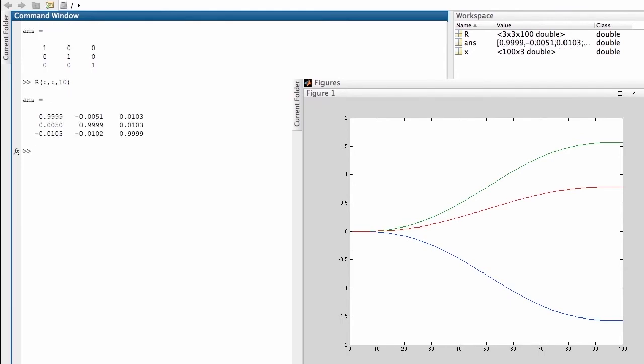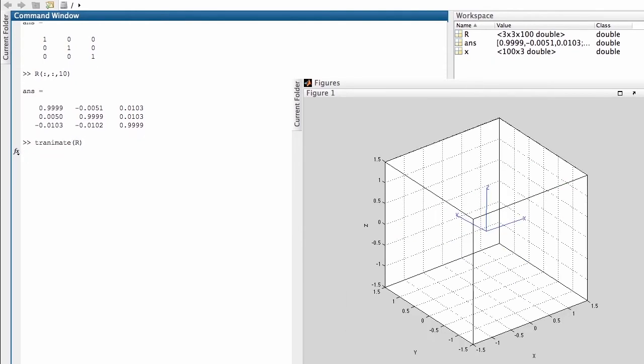I can pass a sequence of rotation matrices like that to the function tranimate and what we will see is an animation showing the orientation of the coordinate frame changing smoothly from the initial orientation specified in terms of roll-pitch yaw angles to a final orientation also specified in terms of roll-pitch yaw angles.